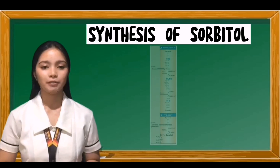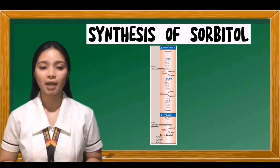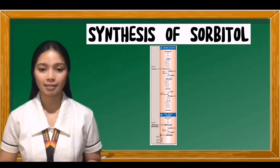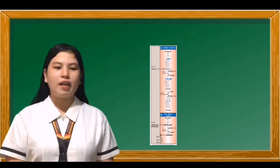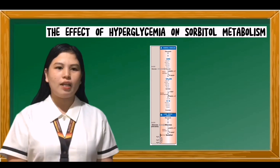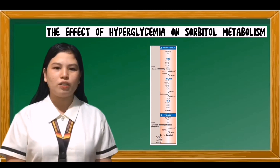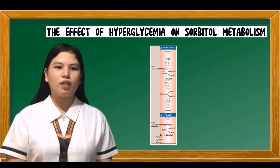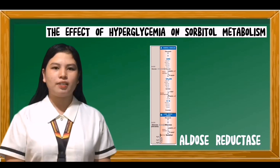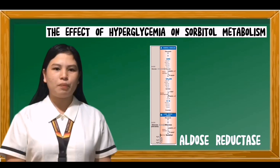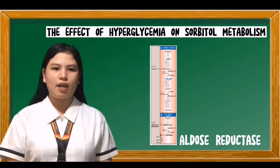The pathway from sorbitol to fructose in the liver provides a mechanism by which any available sorbitol is converted into a substrate that can enter glycolysis or gluconeogenesis. Regarding the effect of hyperglycemia on sorbitol metabolism: elevated intracellular glucose concentration and an adequate supply of NADPH cause aldose reductase to produce a significant increase in the amount of sorbitol, which cannot pass efficiently through cell membranes and therefore remains trapped inside the cell.